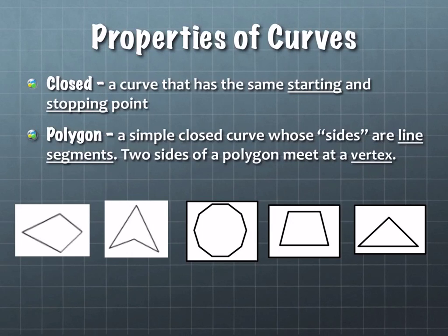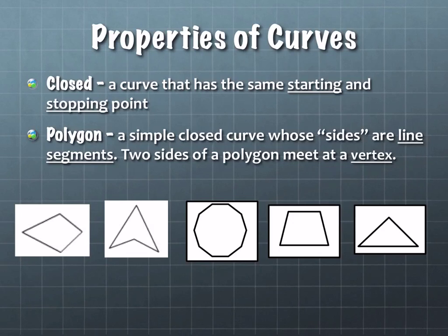These drawings are all examples of polygons. A square would be a polygon. The majority of our time today is going to be spent talking about polygons and different types of polygons. Before we talk about the specific different kinds, we're going to define two more descriptions: convex versus concave.